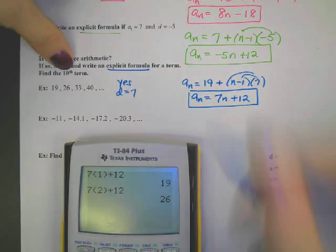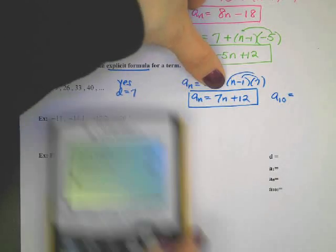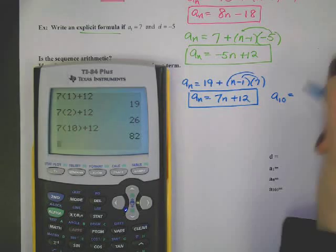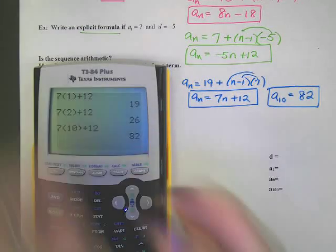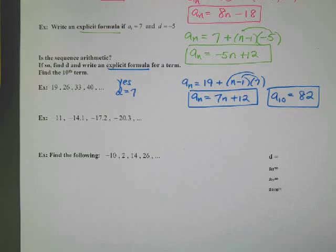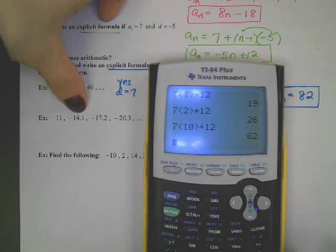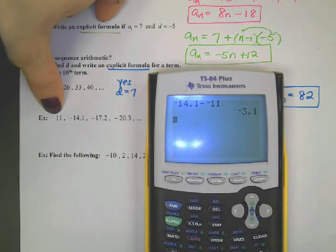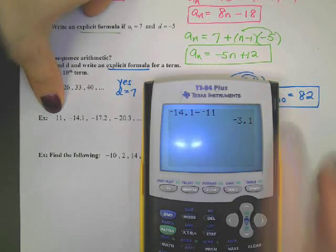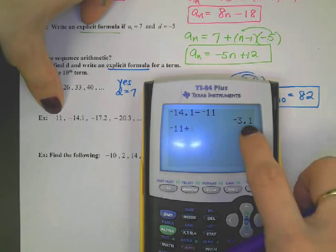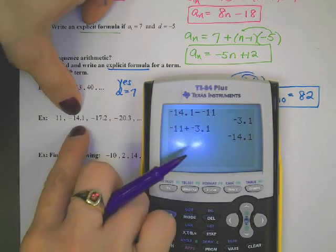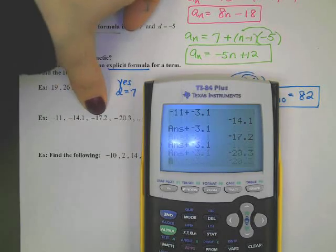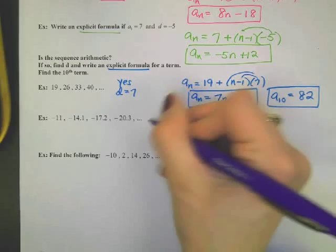They want the 10th term — no problem. Using the formula, 7 times 10 plus 12: the 10th term must be 82. Now let's do another example. Take the second term, negative 14.1, and subtract the previous one, negative 11. So D is negative 3.1. Check: is negative 11 plus negative 3.1 giving the right next term? Yes, D is negative 3.1.